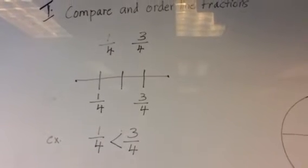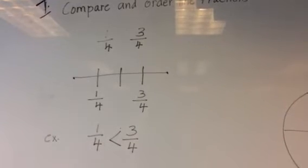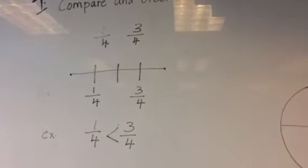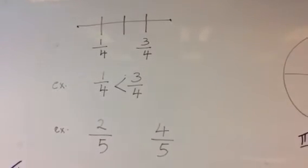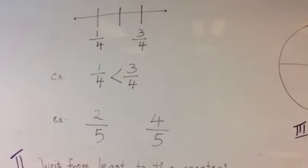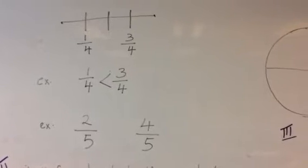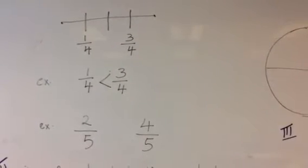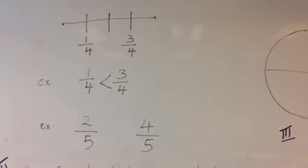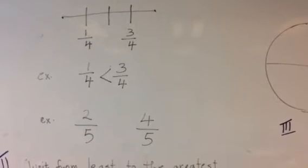One fourth is bigger or three fourths is bigger? If you look at one fourth, one fourth comes before three fourths. So, three fourths is bigger. Going down to another example. Two fifths is bigger or four fifths is bigger? Two fifths is smaller than four.